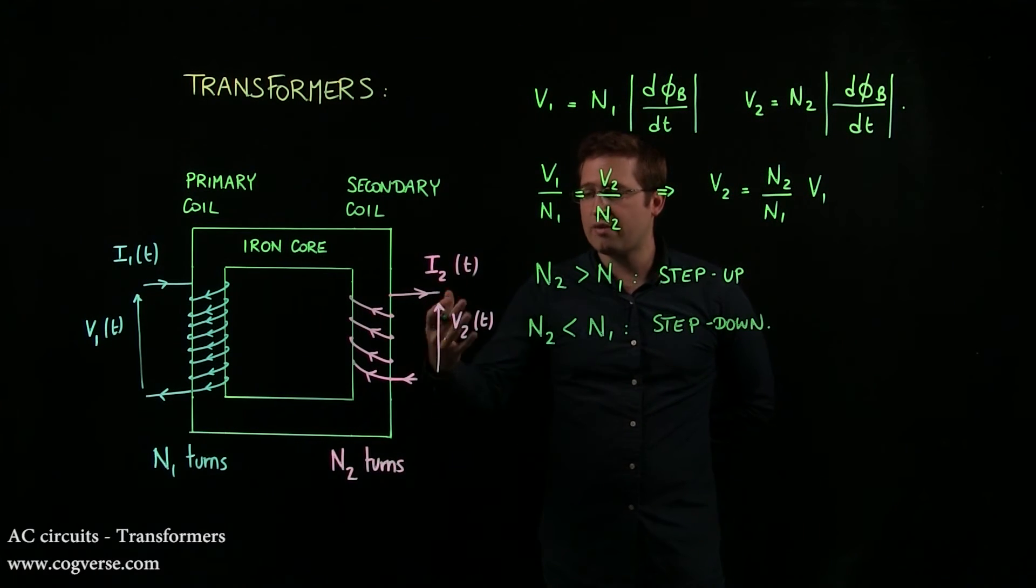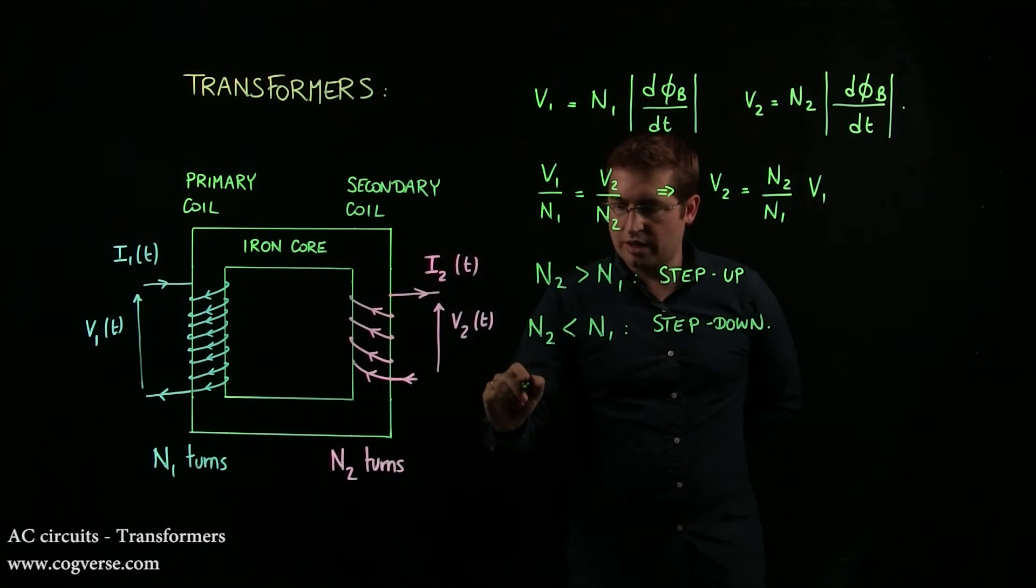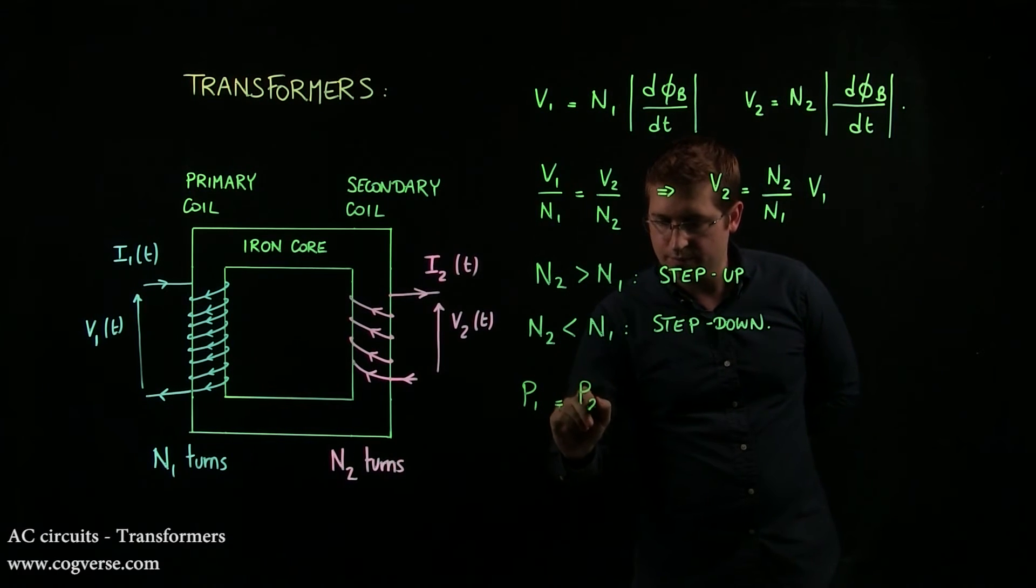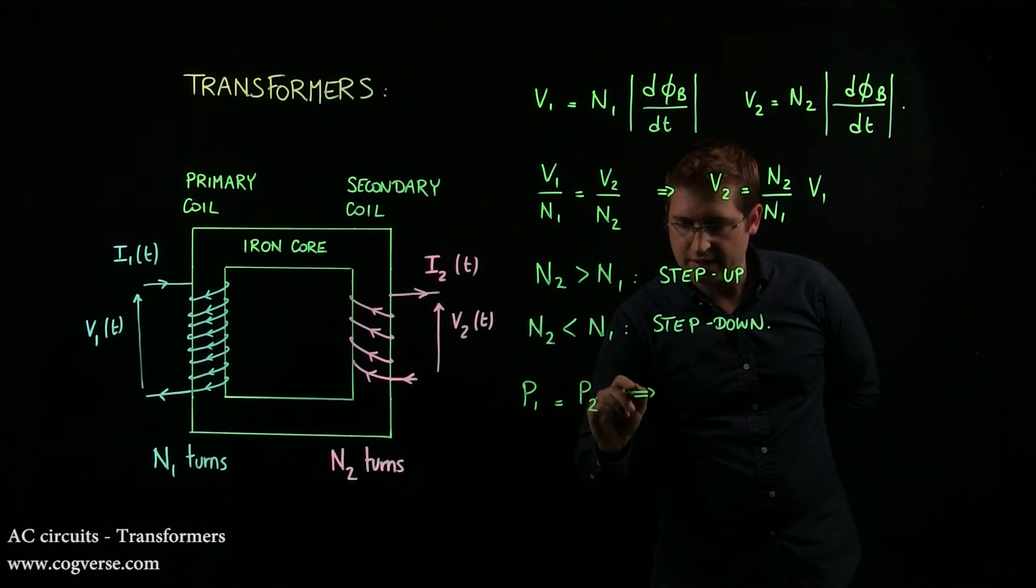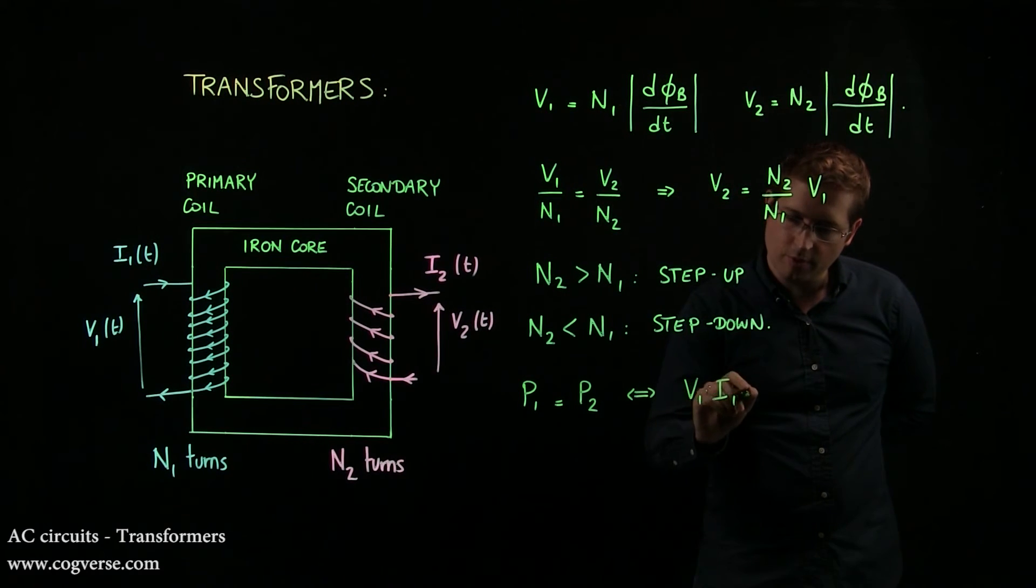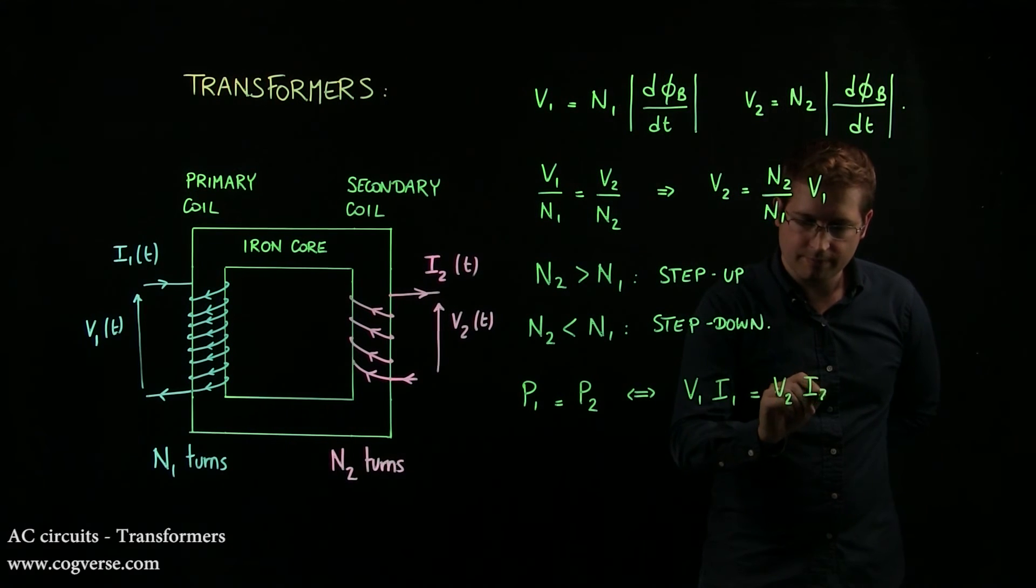And if you have an ideal transformer, if there are no power losses, you can also write that P1 is equal to P2. And that tells you that V1 I1 is equal to V2 I2.